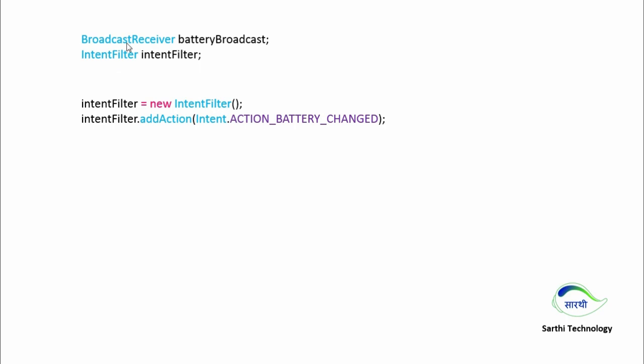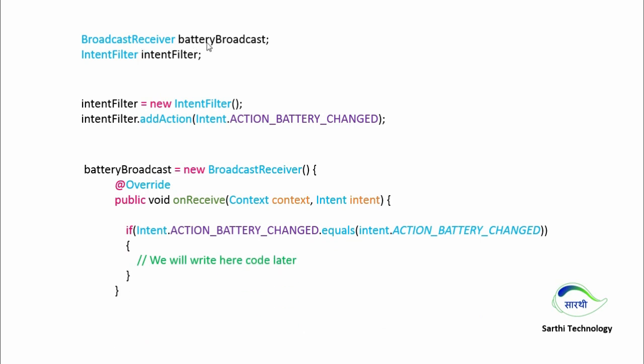To create a broadcast receiver we need two things: one is a broadcast receiver object and another is an intent filter object. Here you can see intent filter equal to new intent filter. We will add an action in this intent filter using intent filter dot add action, and the action will be action battery change. So whenever anything changes in the battery, the Android system will send a message to the application through the broadcast receiver.